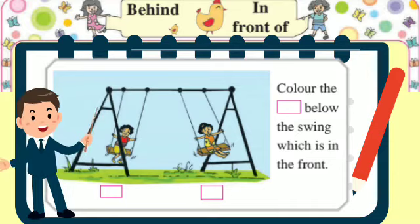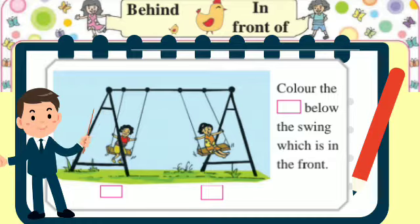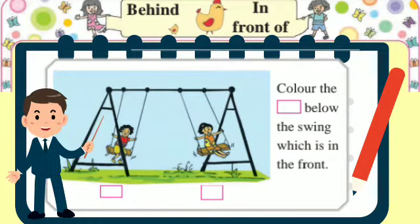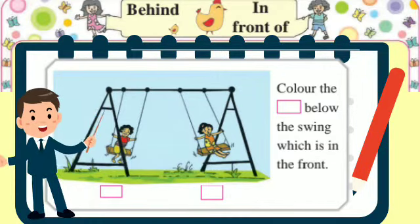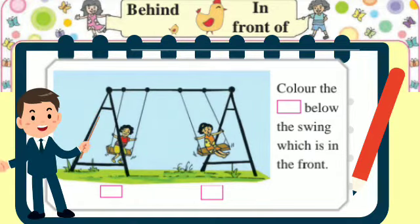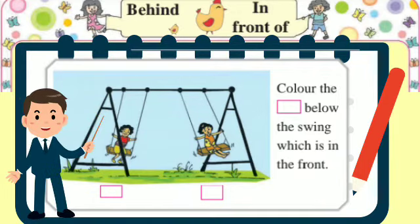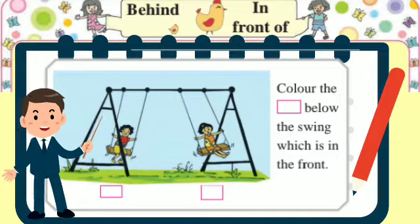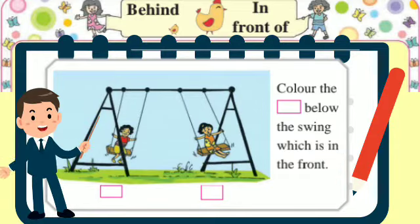In the picture there are two girls on a swing. Which girl's swing is in front and which girl's swing is behind? Color the box below the swing which is in the front.